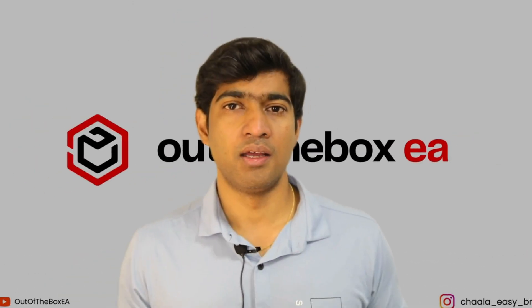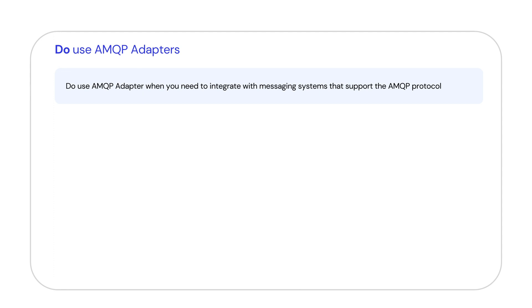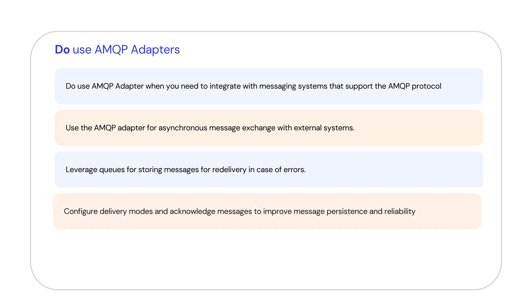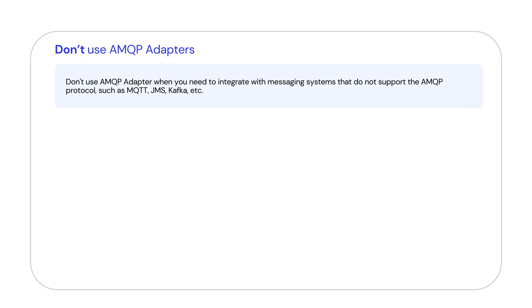Let's now talk about the do's and don'ts of using the AMQP adapter. Use the AMQP adapter when you need to integrate an external system that supports AMQP protocol. Use it for asynchronous communication integrations. You can leverage queue sorting in AMQP protocol for better handling of messages. You can also configure delivery modes and acknowledge messages to improve message persistence and reliability.